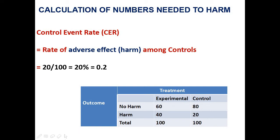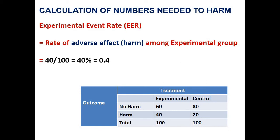Please see the example. 100 people were in the experimental group and 100 people were controls. Out of 100 experimental people, 40 got harm. Out of 100 controls, 20 got harm. So control event rate is the rate of adverse events among controls: 20 divided by 100, that is 20 percent, or 0.2. Experimental event rate is the rate of adverse event or harm among the experimental group: 40 out of 100, that is 40 percent, or 0.4.